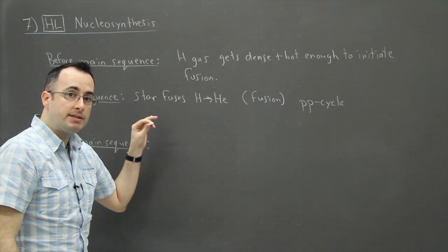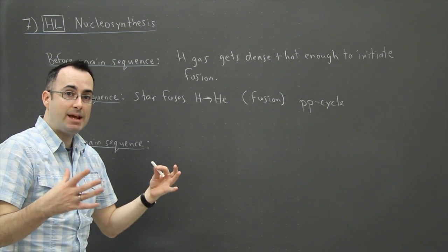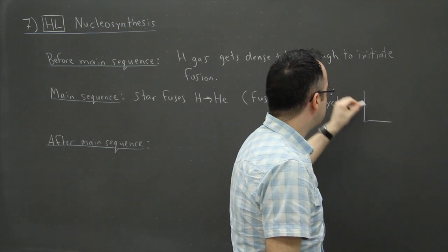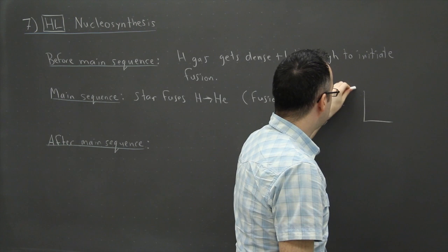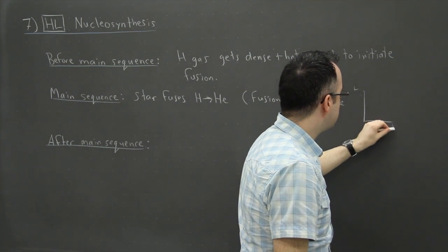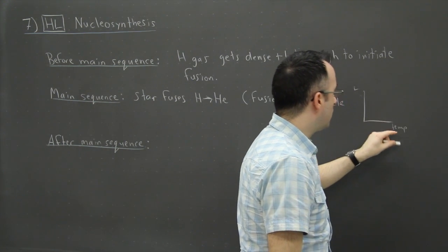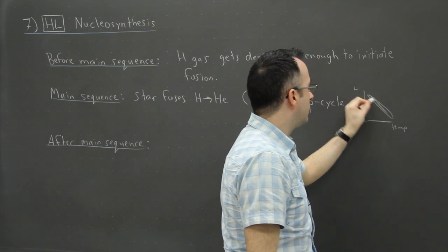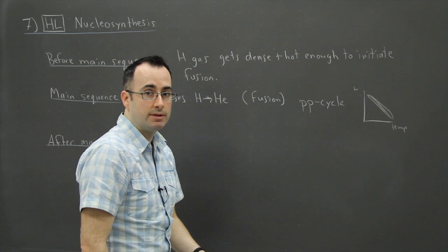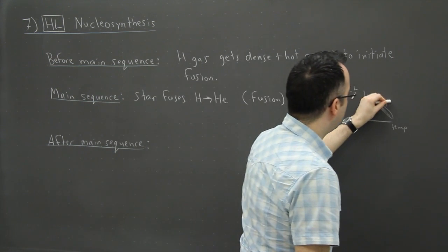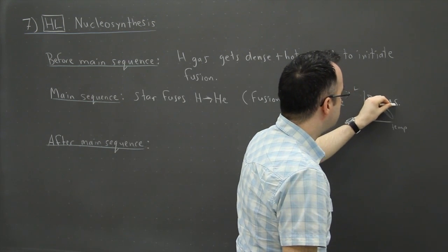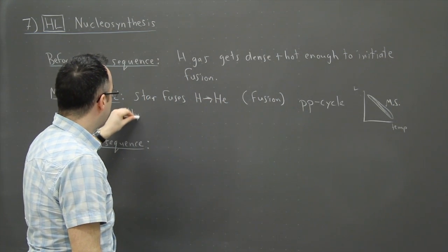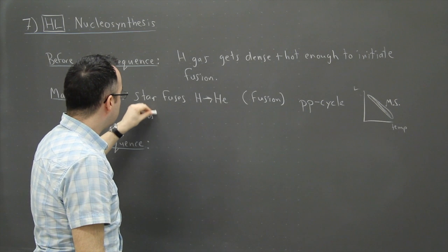Now, during the main sequence, the star itself is stable. Remember in the HR diagram, this is luminosity and this is temperature, but it could also be color or spectral class. It's located somewhere here in this main sequence. During this time then, it's in hydrostatic equilibrium. This is the key word here.